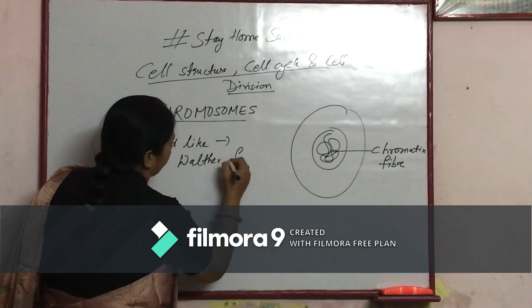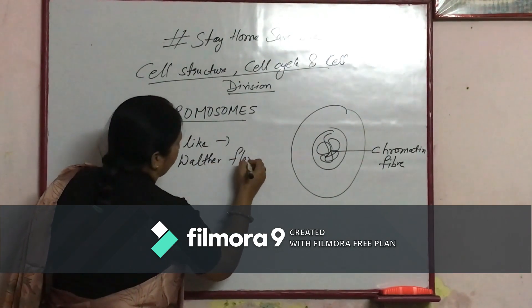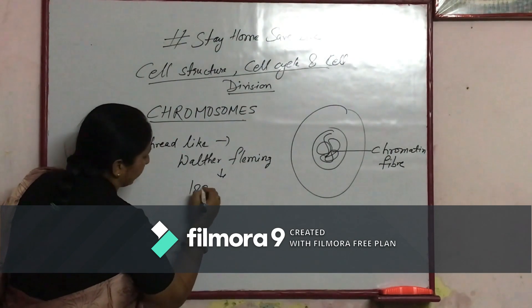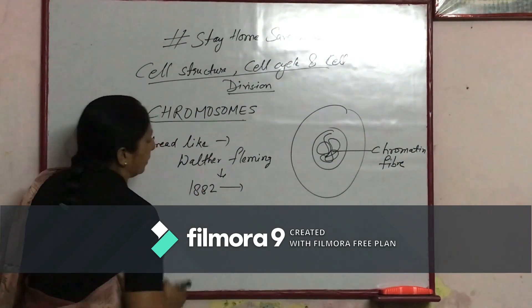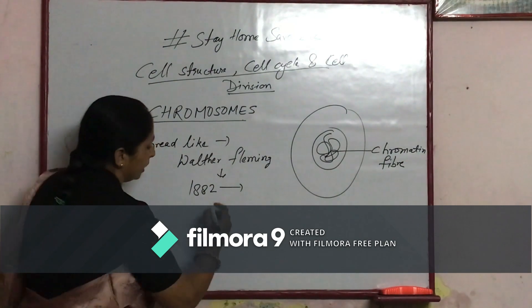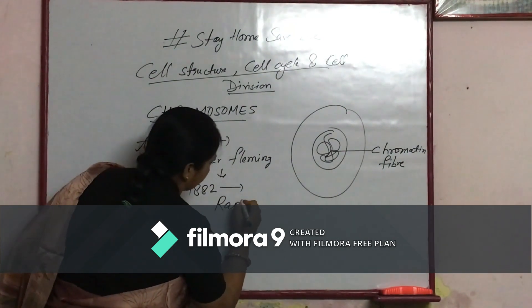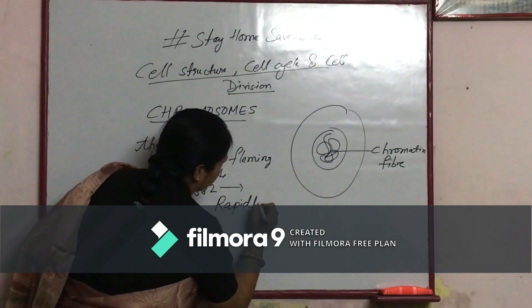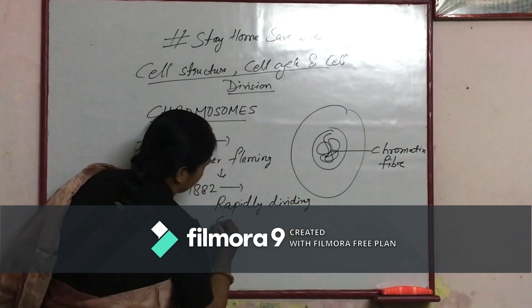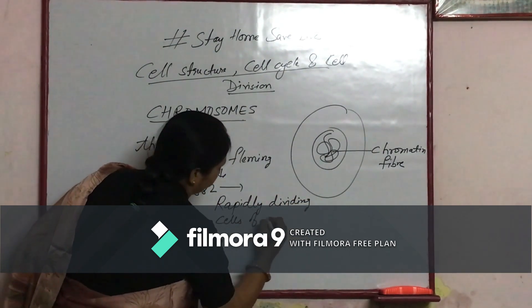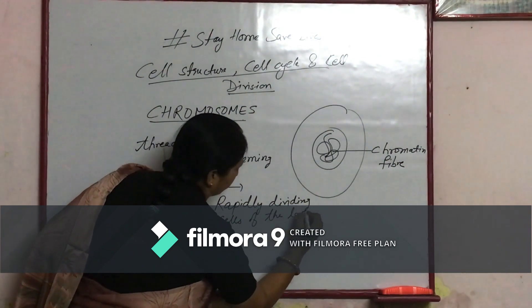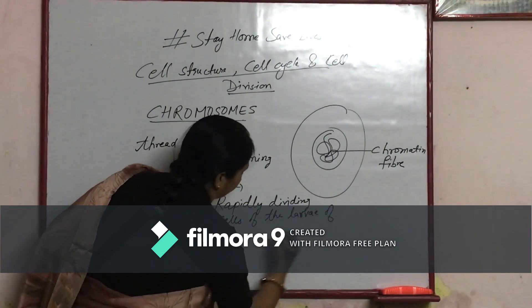Walther Fleming in 1882 observed this in the rapidly dividing cells of the larvae of salamander.